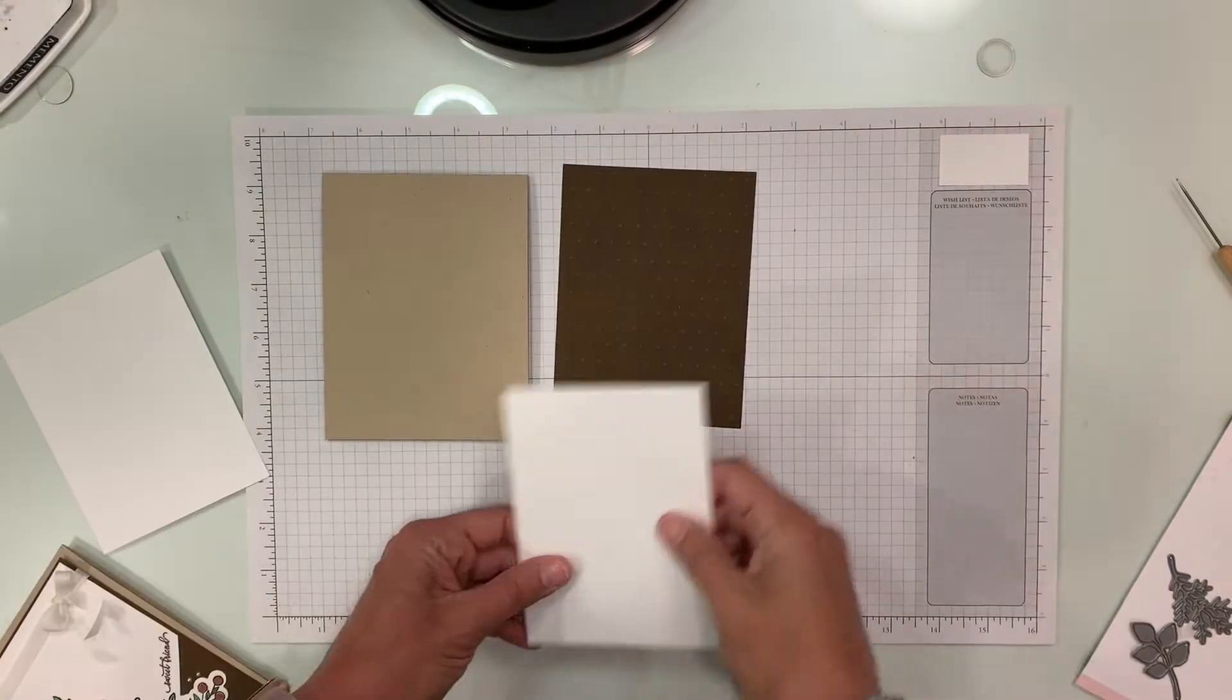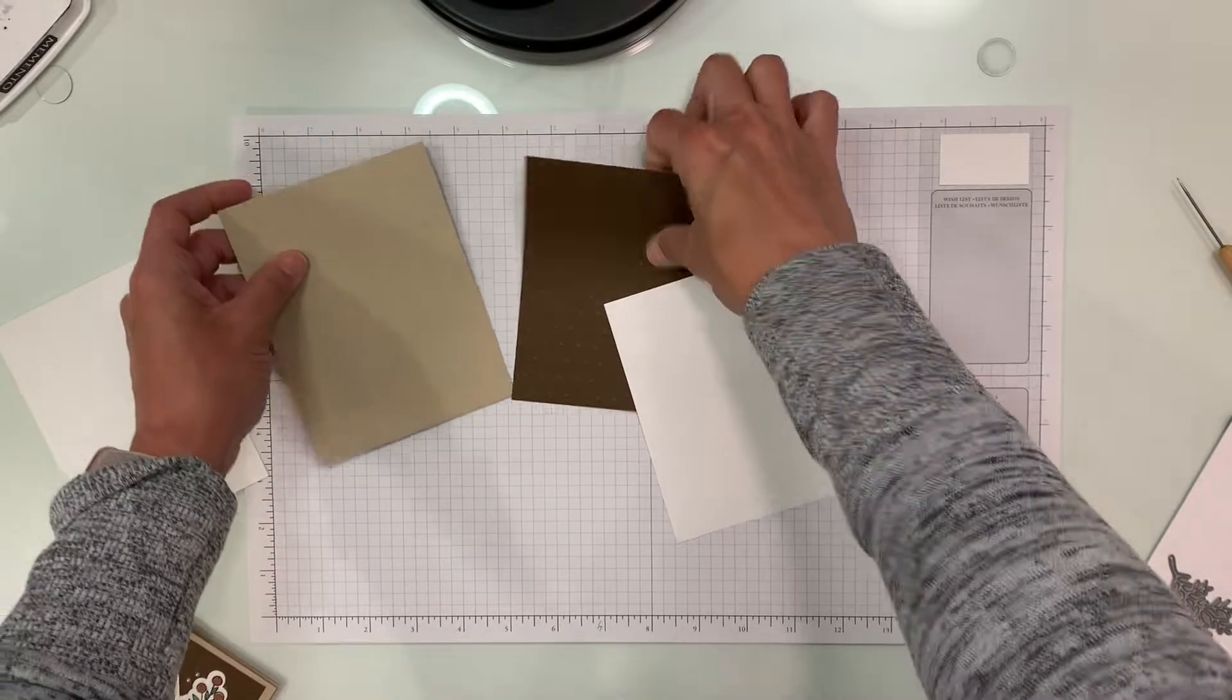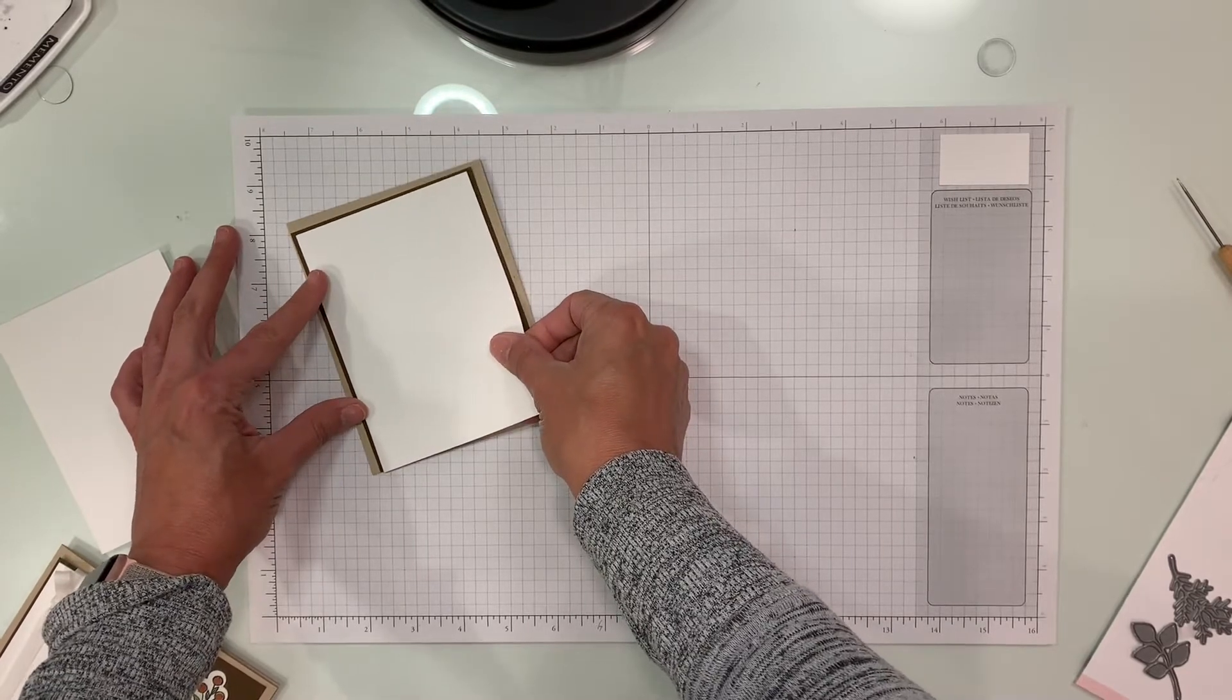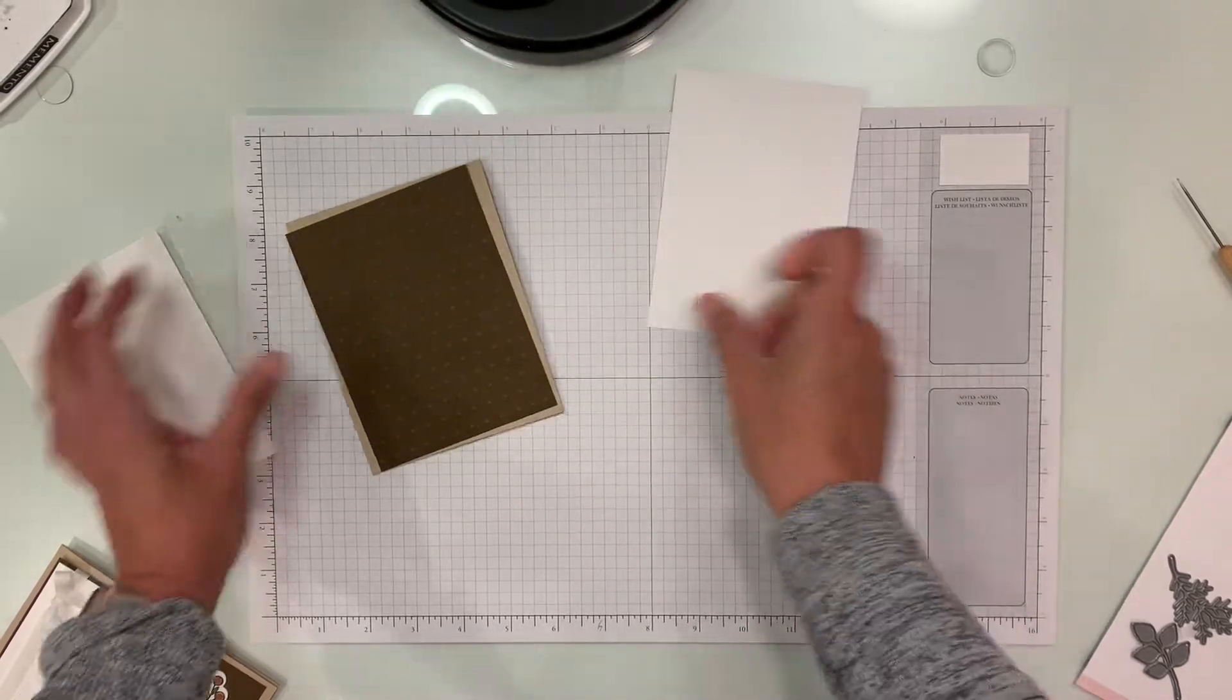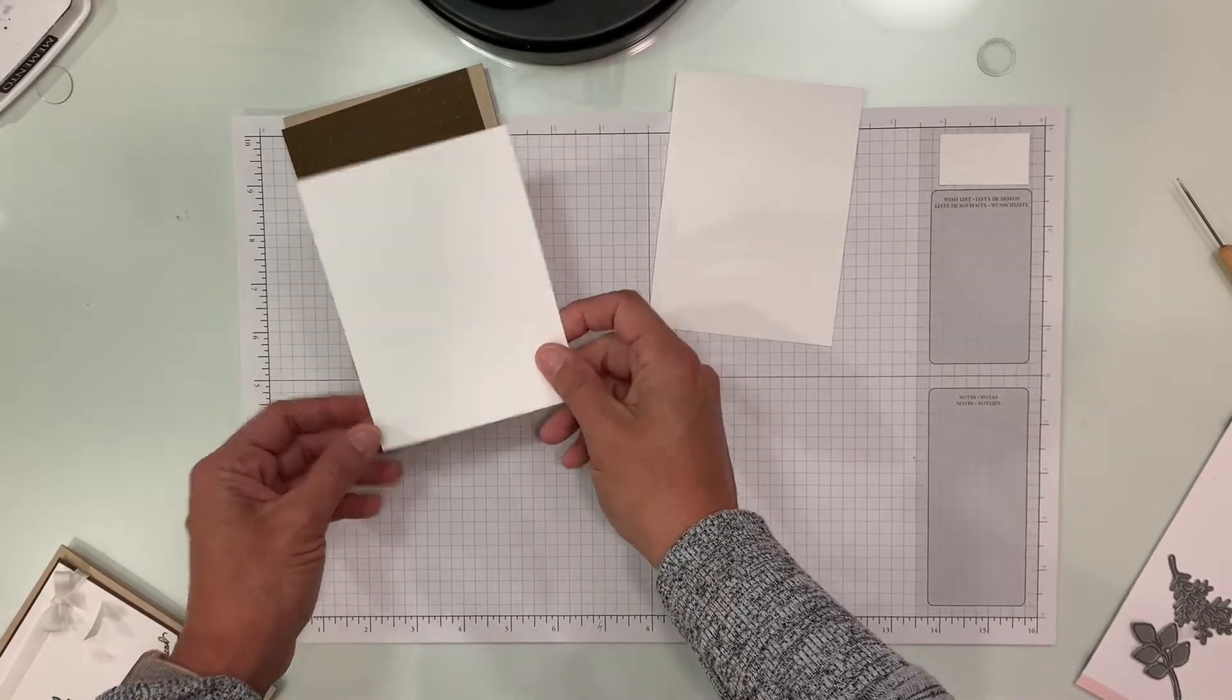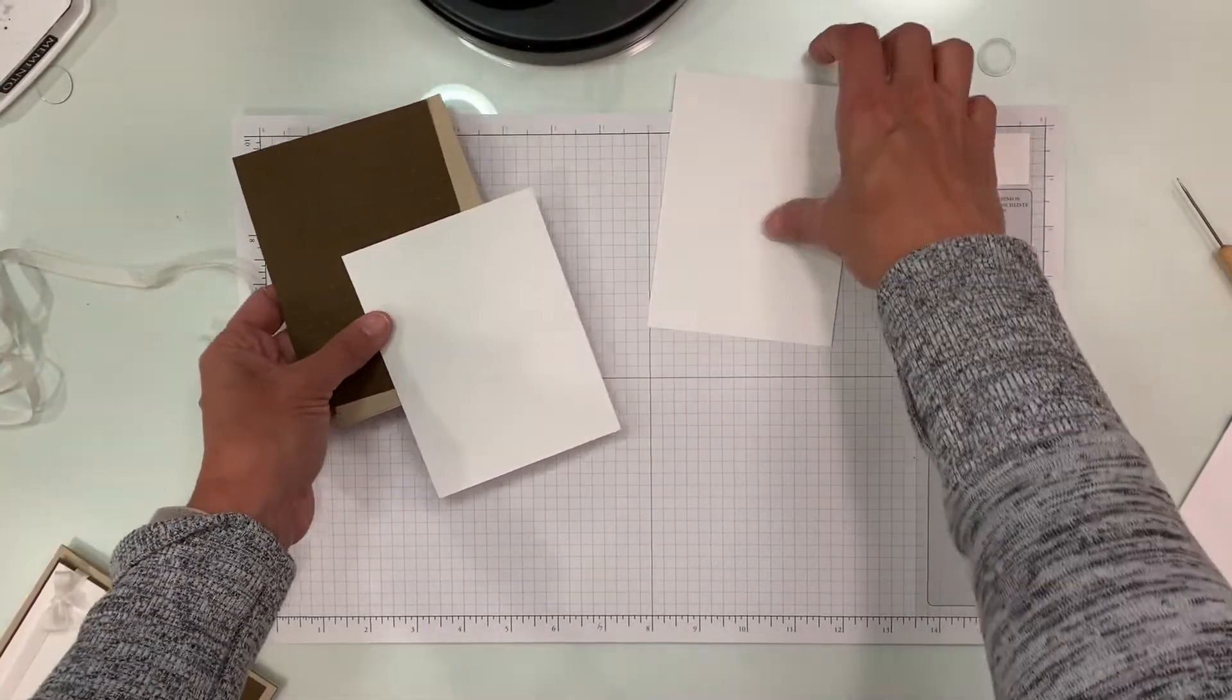Okay, the supplies that I have are a craft card base or oatmeal cookie, which is what I used. I have a hazelnut blend embossed layer here and then I have a white panel that is cut slightly smaller than the brown and we're going to stamp on this one. Then I have a white panel for the inside of the card, some thin seam binding ribbon, some pearls, and some ink.